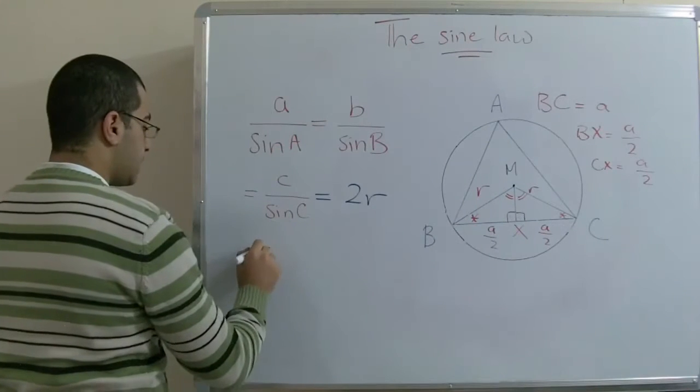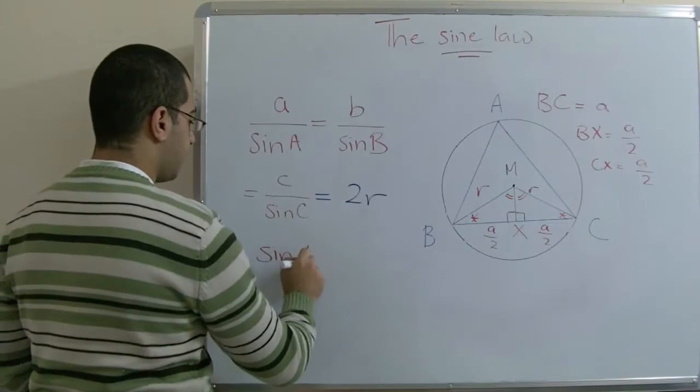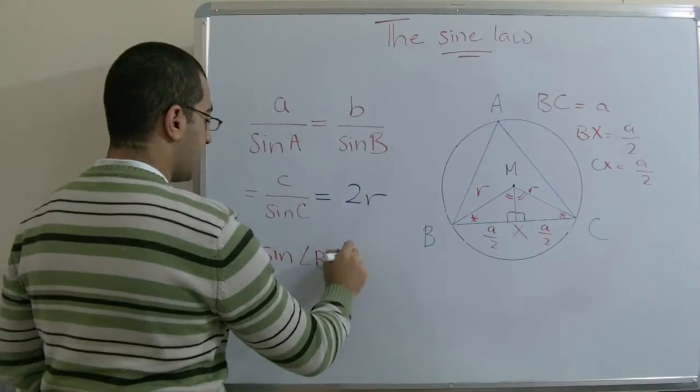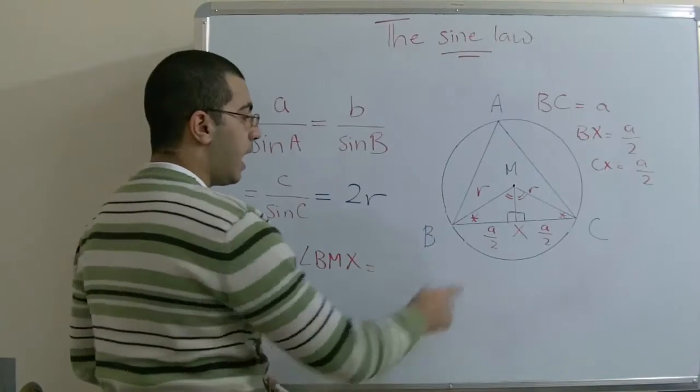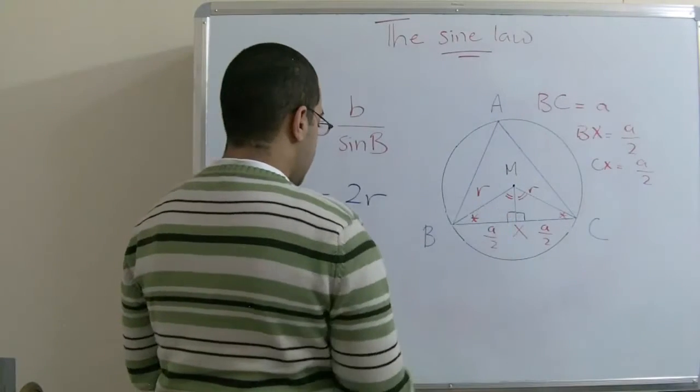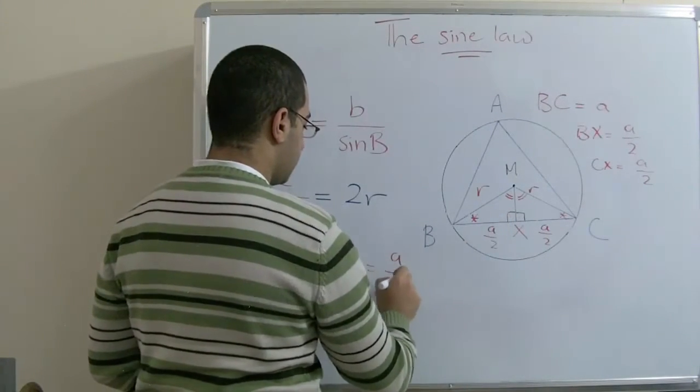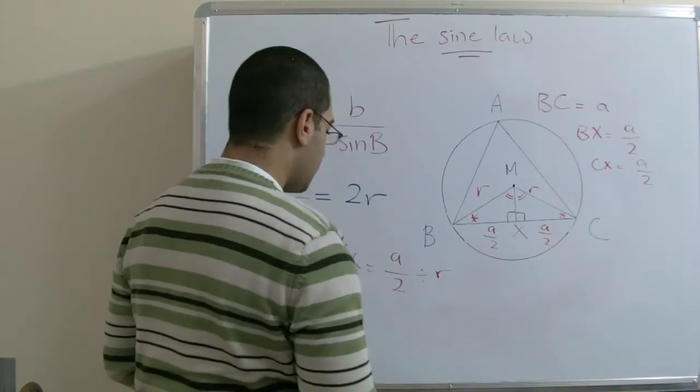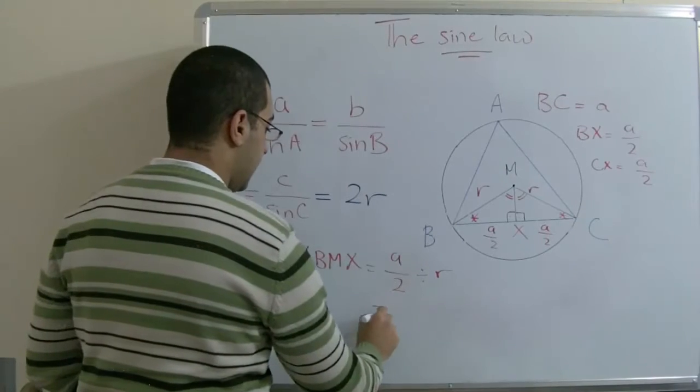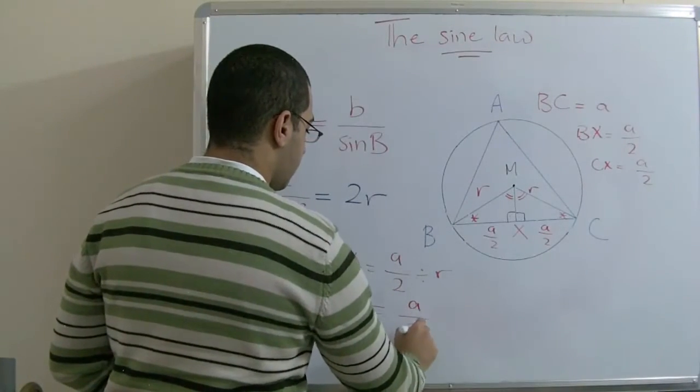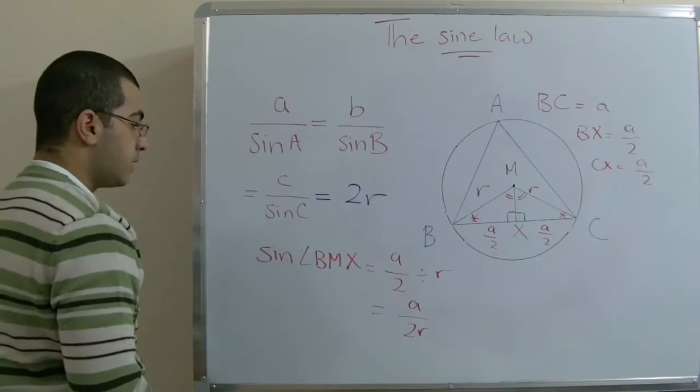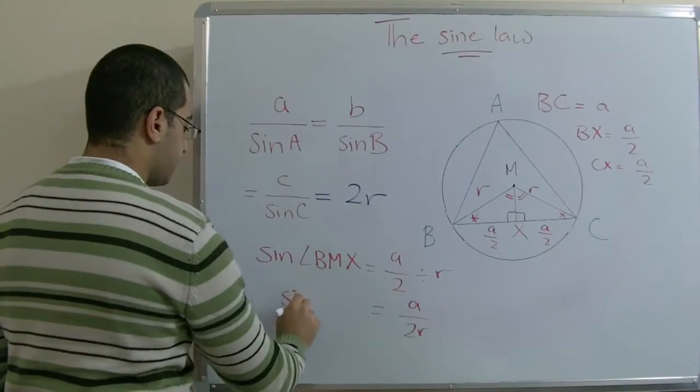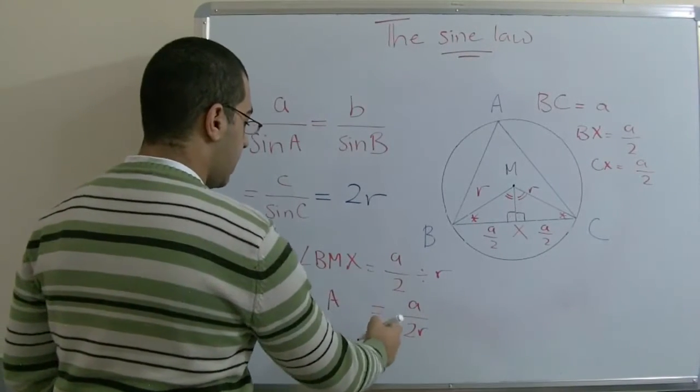The sine of angle BMX equals the opposite over the hypotenuse: a over 2 divided by R, to get a over 2R. So sine A equals a over 2R.